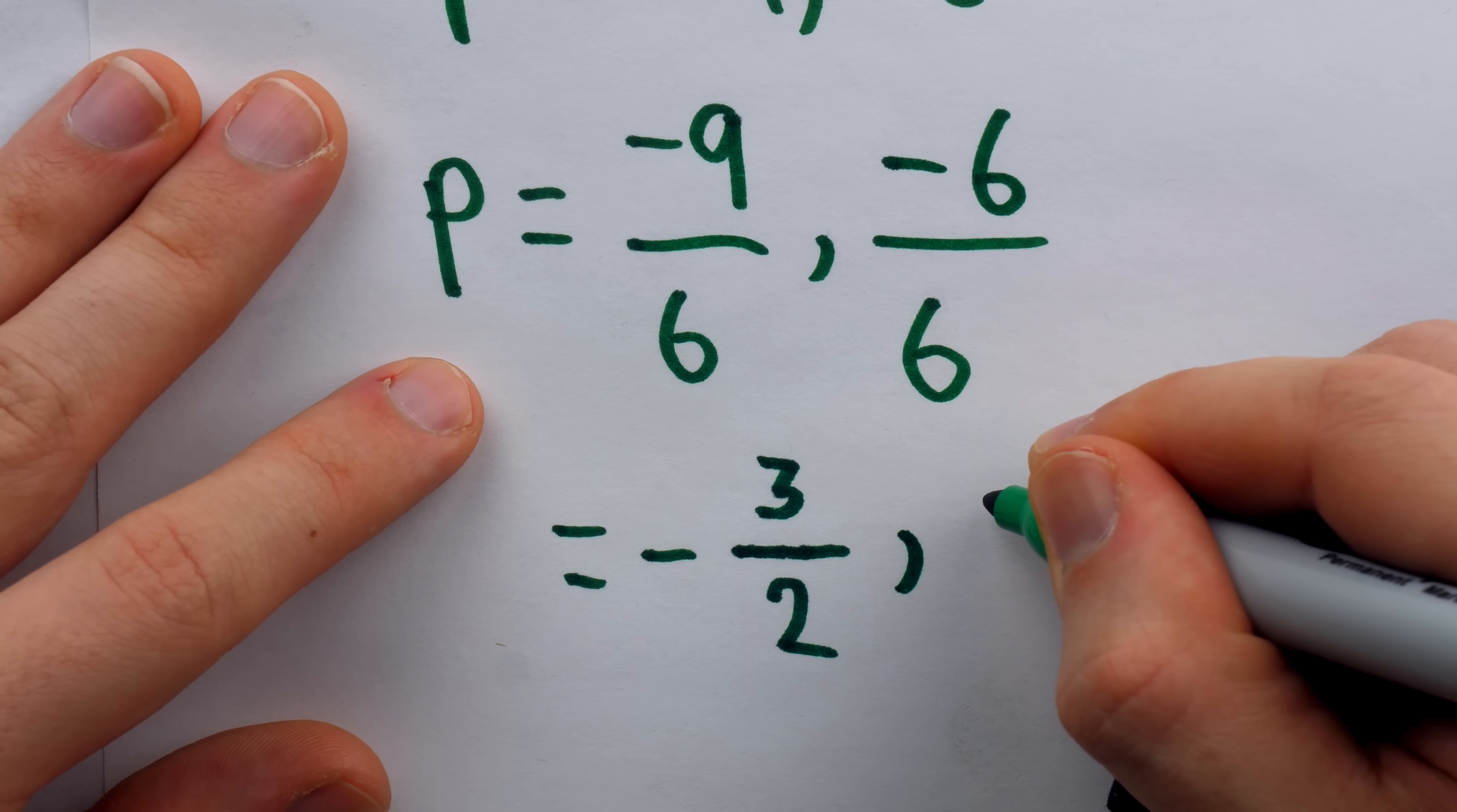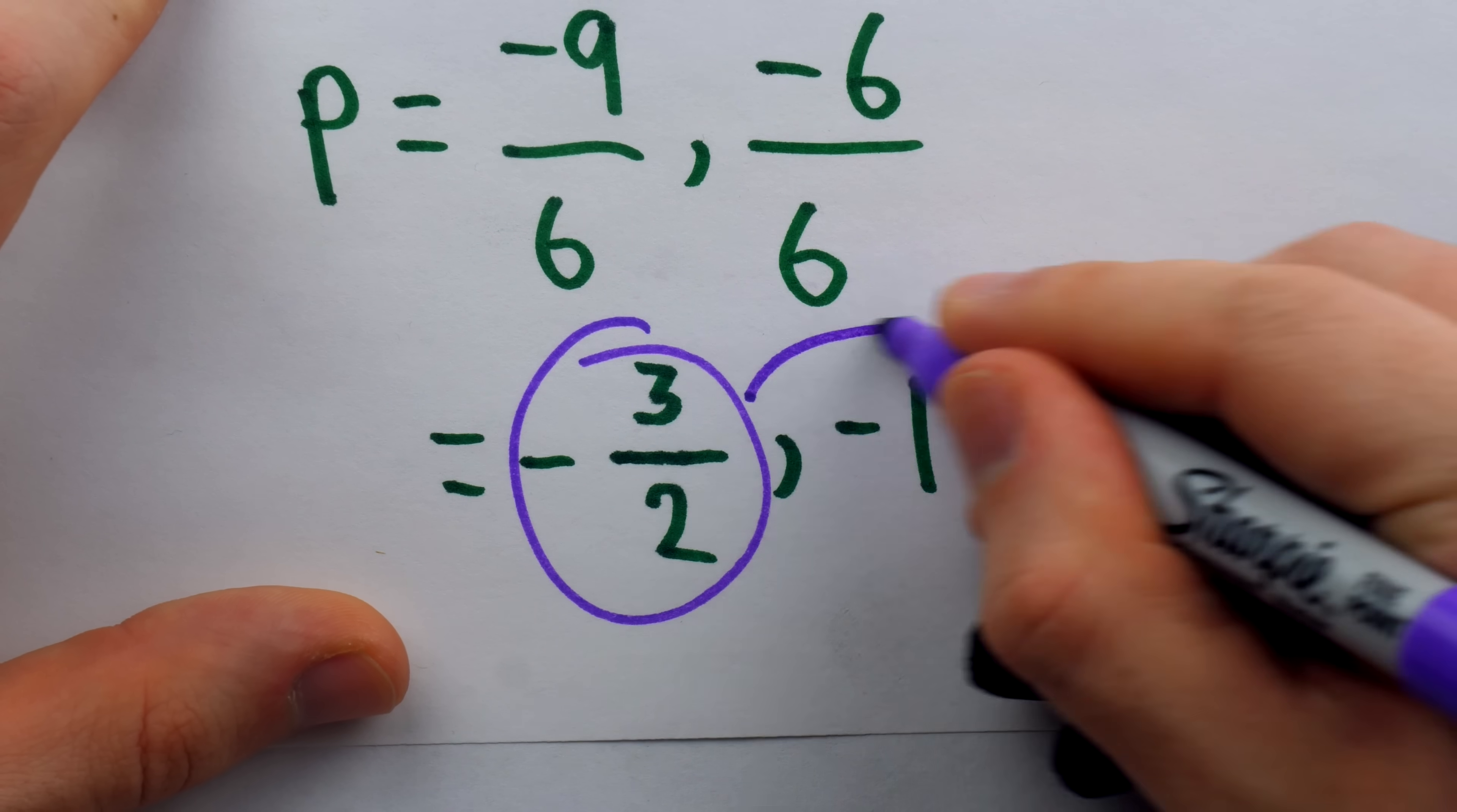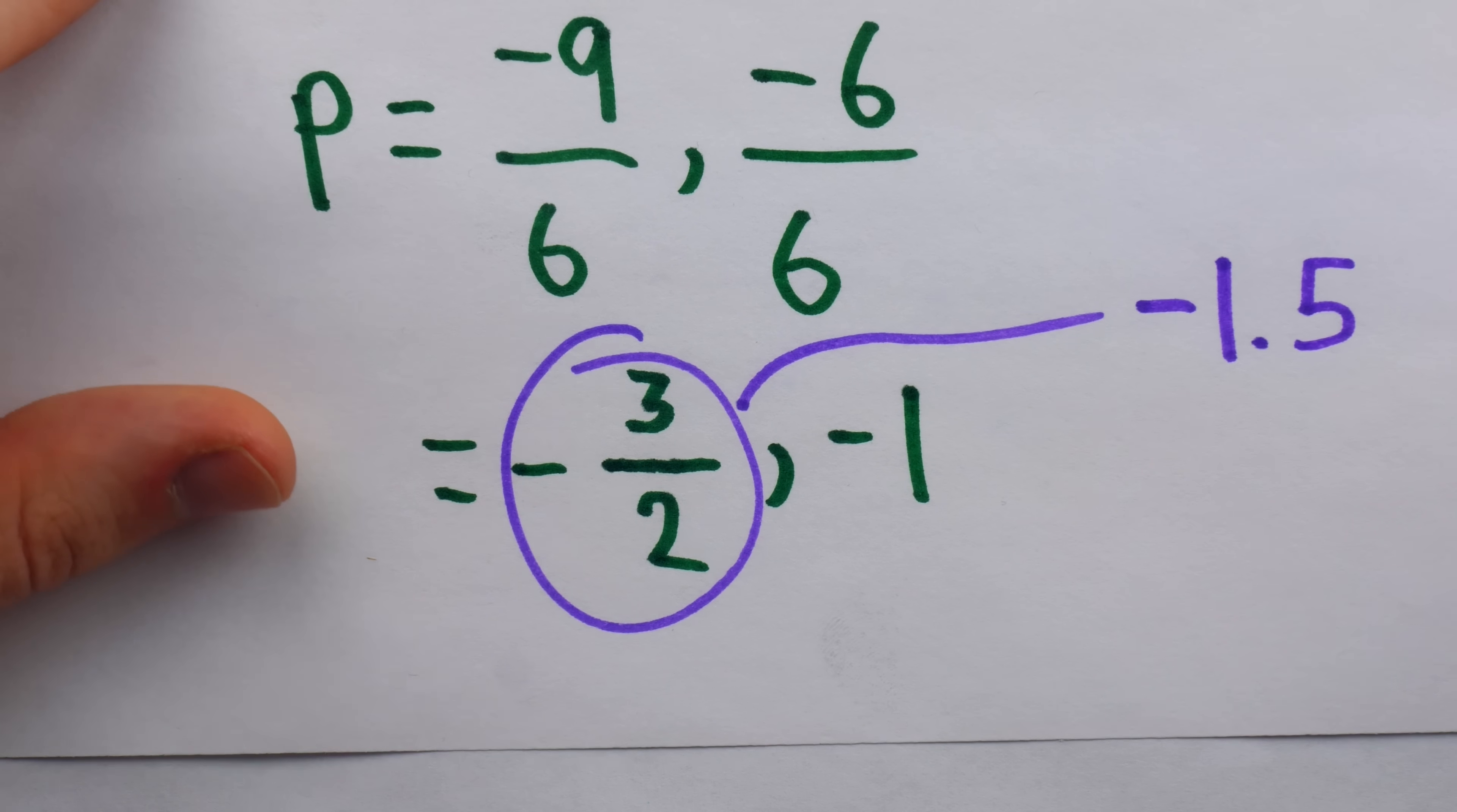If there are actually any algebra 2 students watching this video, I know you guys like decimals a lot, so if you want, yes, you could say negative 3 over 2 is negative 1.5. It makes me a little sick, but you could say it.